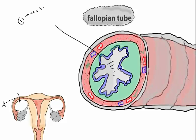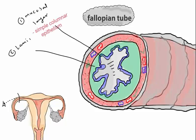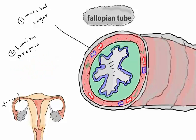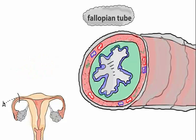Looking at a cross-section of the fallopian tube, we can see the lumen and four layers. The first is the mucosal layer, near to the lumen, composed of simple columnar epithelium. The second layer is the lamina propria, which contains vascular connective tissue and three types of cells.